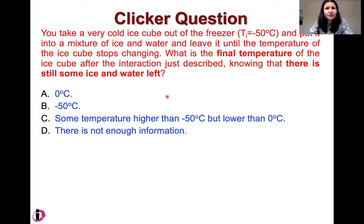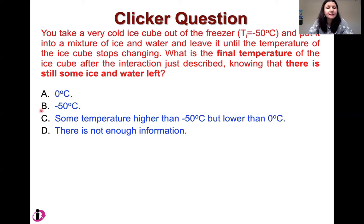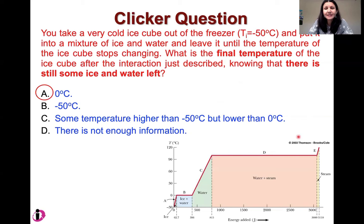One more question, similar to the previous one. You take a very cold ice cube out of the freezer — minus 50 degrees Celsius — and put it into a mixture of ice and water, leaving it until the temperature of the ice cube stops changing. Thermal equilibrium has been reached. What is the final temperature of the ice cube after this interaction, knowing that there is still some ice and water left? Is it zero, minus 50, somewhere in between, or not enough information? The answer is zero degrees Celsius.